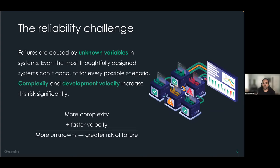Unfortunately, modern systems are only getting more complex by the day. On top of that, companies are always looking to increase development velocity — we need to develop features faster, test faster, push to customers faster, fix bugs faster. That competitive need means failures are more likely to creep in. Not only are systems becoming more complex, they're also constantly changing, and we're changing them faster than ever before. So how can we possibly improve reliability when there's so much chaos going on?